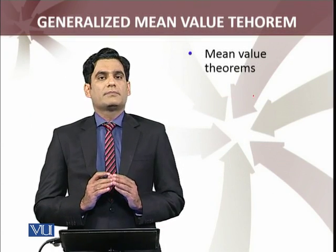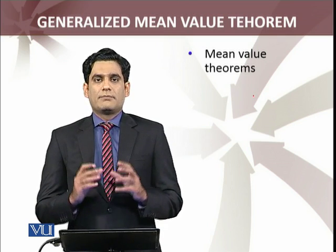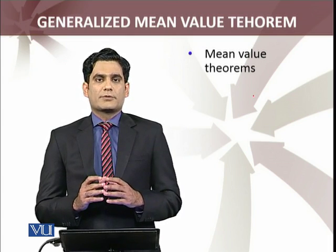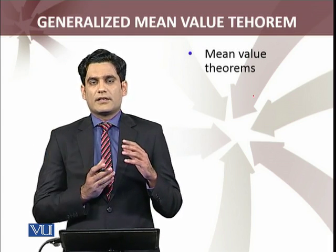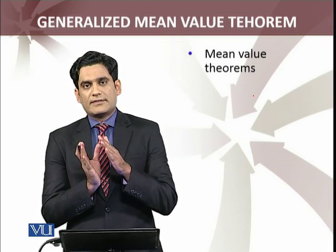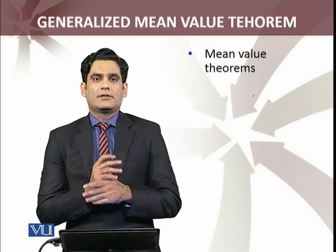So we have proved the mean value theorem and what we call the generalized mean value theorem. We proved them, and I also explained to you graphically that a secant line exists, and there must be a c such that at that point c, the tangent line and secant line are parallel.